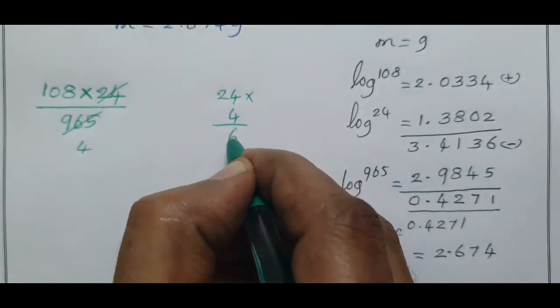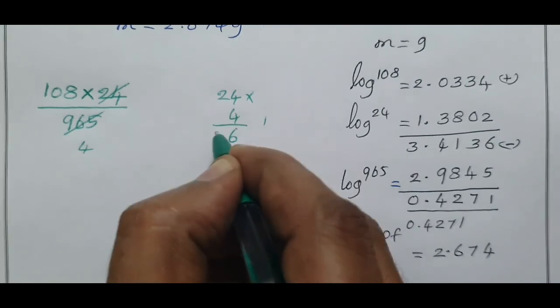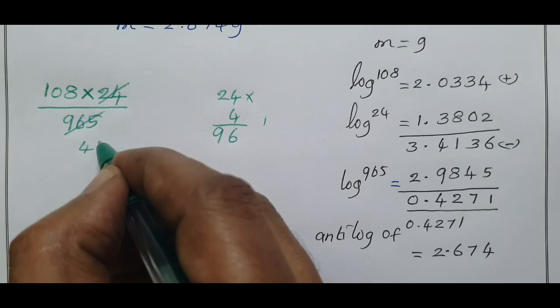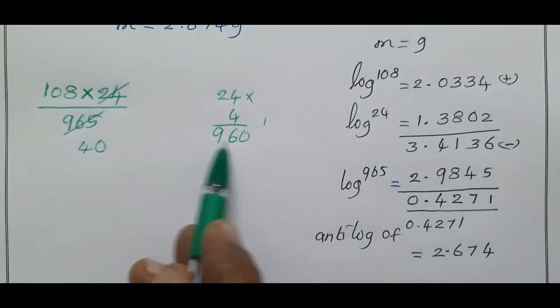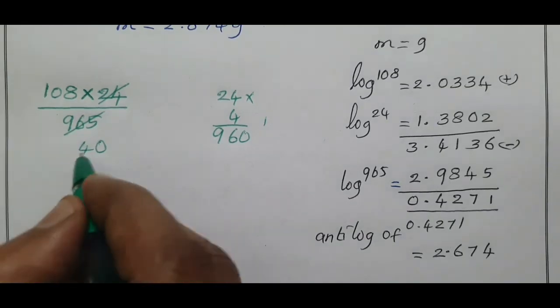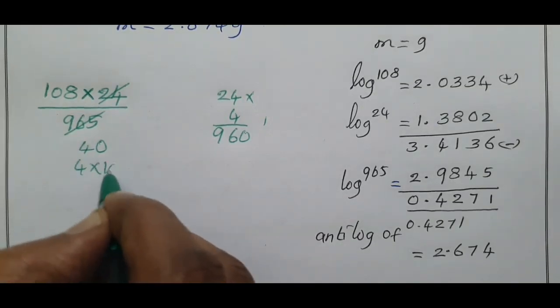4 times 24 is 24, 4 times 24 is actually 40, and 24 times 4 equals 96. So we get 960. Approximate value, 965 here is about 960.